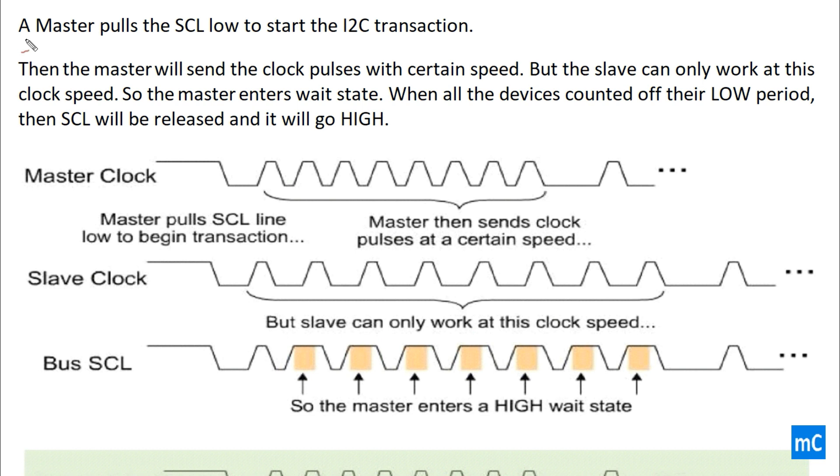A master pulls the SCL low to start the I2C transaction. The master will send the clock pulses with certain speed. But the slave can only work at this low clock speed. So, the master enters the wait state.